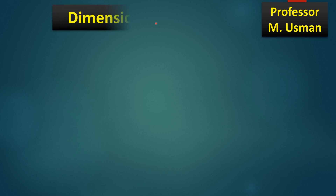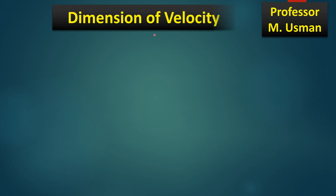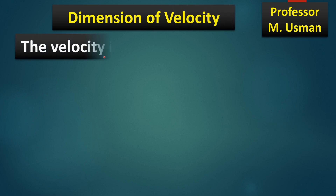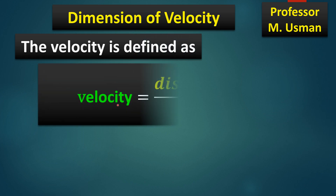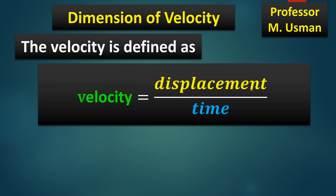Bismillahirrahmanirrahim. Let us calculate the dimensions of velocity V. We know that velocity is defined as the time rate of change of displacement — velocity is equal to displacement divided by time.